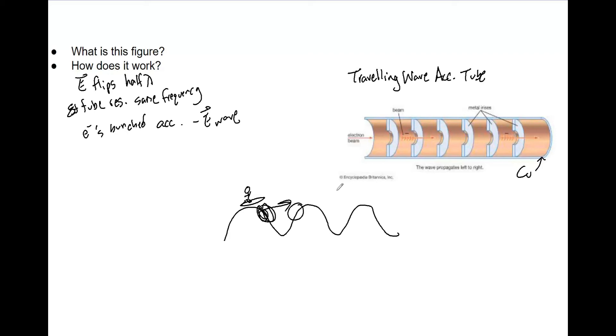The acceleration of the electrons only happens in one of four cavities, unlike standing wave accelerator tubes which typically happen in one for every two. Because of this, the traveling wave accelerator tubes must be longer. When you're comparing the two, it's important to know that they are longer, and that is why - it takes more cavities to accelerate the electrons the same amount.